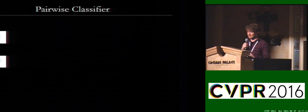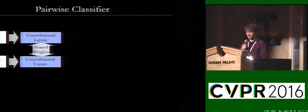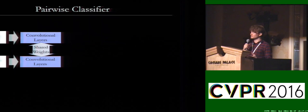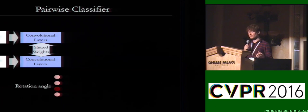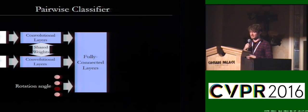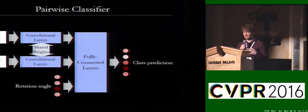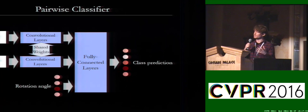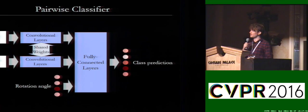Here's how we classify each image pair. We send the pair through a Siamese CNN with shared weights in the convolutional layers to speed up training. We then bring in the rotation angle between the two images using one-hot encoding, which enriches the representation of the image pair. We pass all of this through a set of fully connected layers, and the output is the class prediction of that object based on just the pair of images.